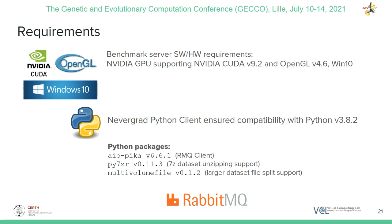The Benchmark Server requires an NVIDIA GPU supporting CUDA 9.2 and OpenGL 4.6, and a Windows 10 operating system. On the other hand, for the NeverGrad Python Client, compatibility is ensured with Python 3.8.2 with a minimum number of dependent packages.